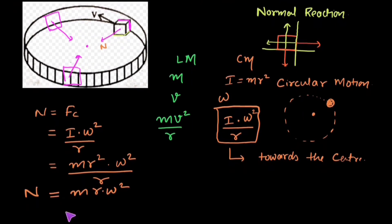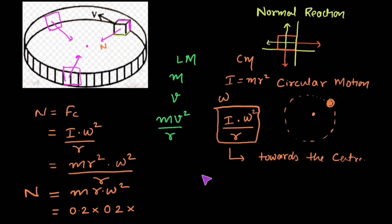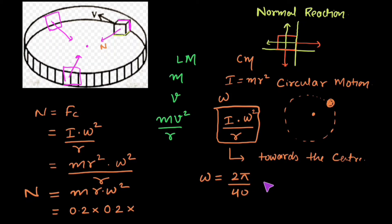So we need to find the value of MRω². The mass of the block is given as 200 grams, which converts to 0.2 kilograms. The radius of the circular path is given as 20 centimeters, which converts to 0.2 meters. So we have 0.2 × 0.2 × ω². The value of omega is not directly given, but the block completes one round in 40 seconds, giving omega = 2π/40 = π/20.